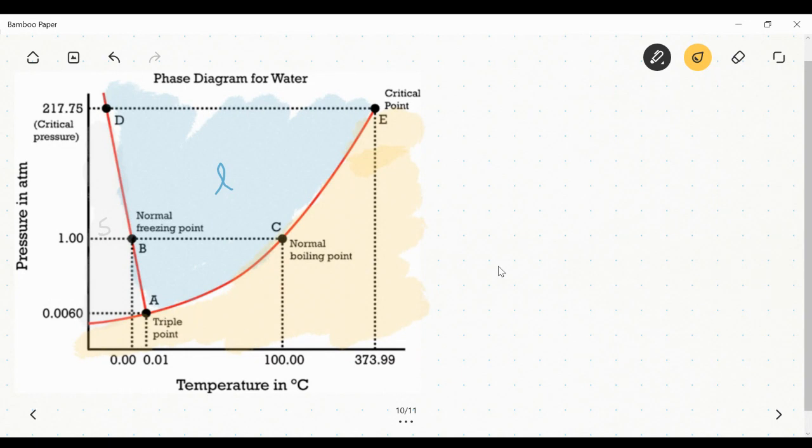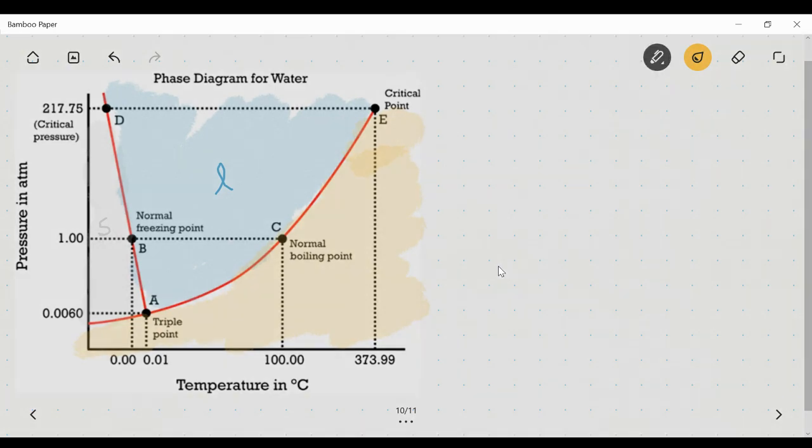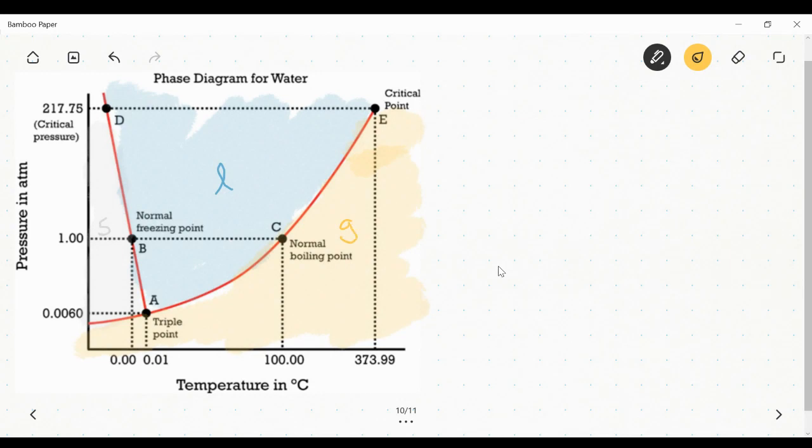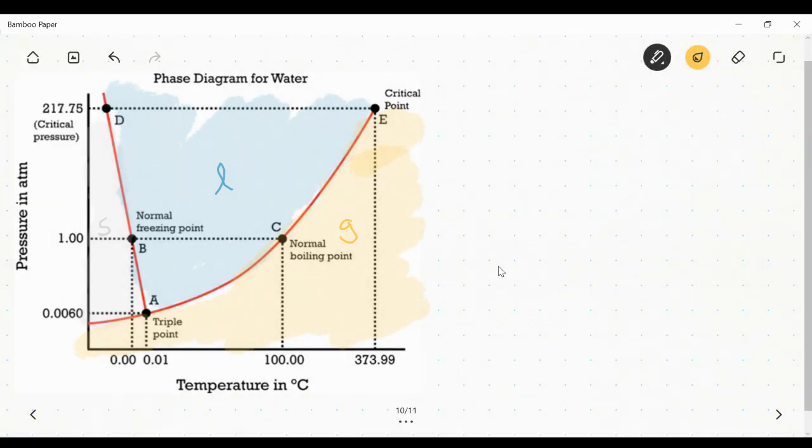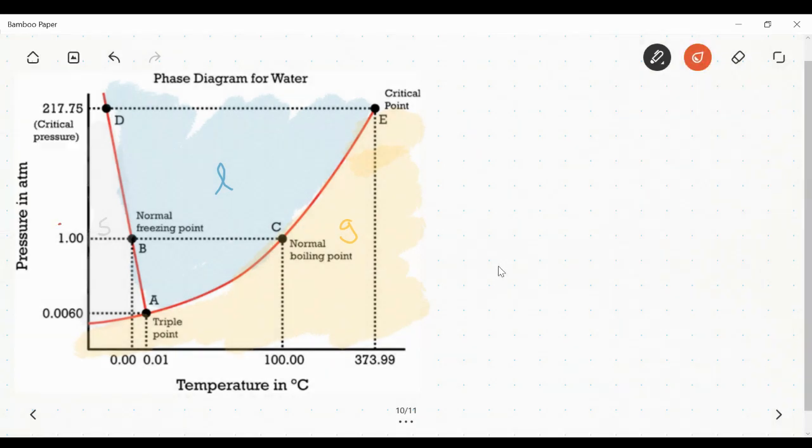The reason for that is that not only is temperature important when you think about phases, but it's also important to consider the pressure that a substance is under. We experience life typically at one atmosphere, and one atmosphere is marked on this graph. You can see it on the y-axis, it's right here.